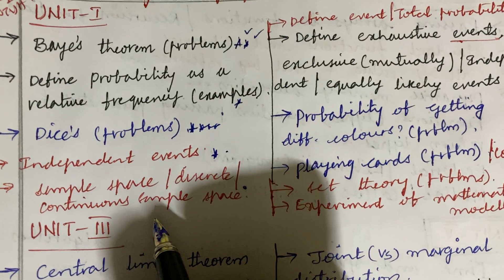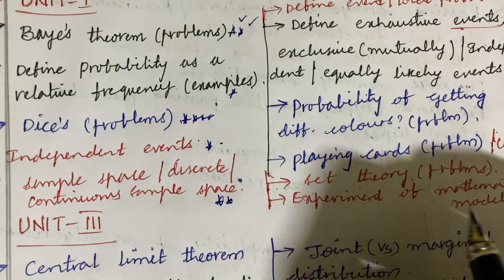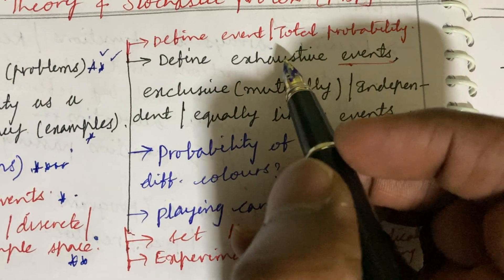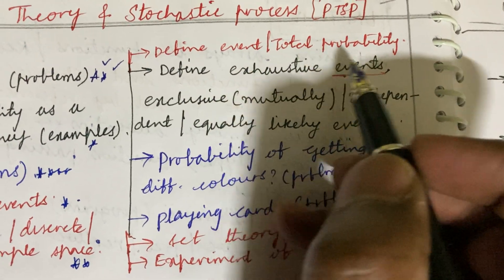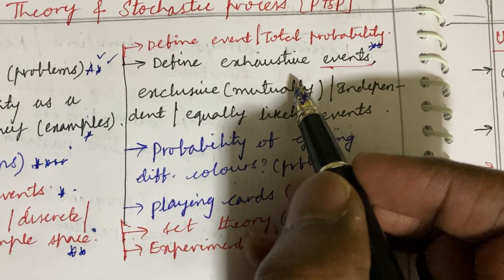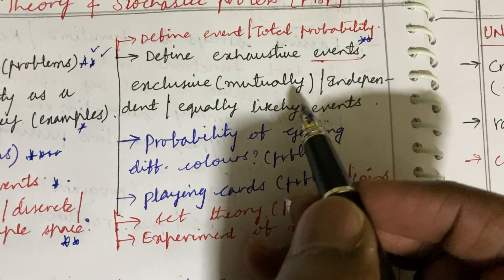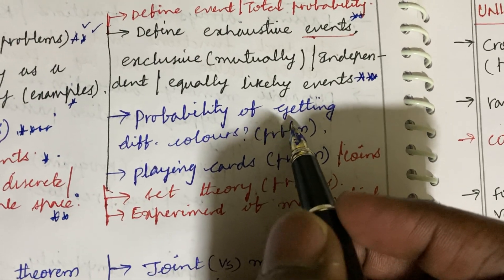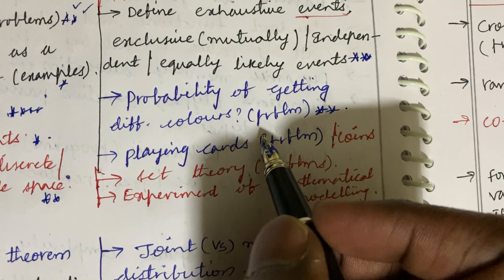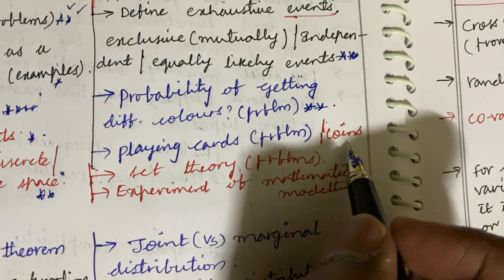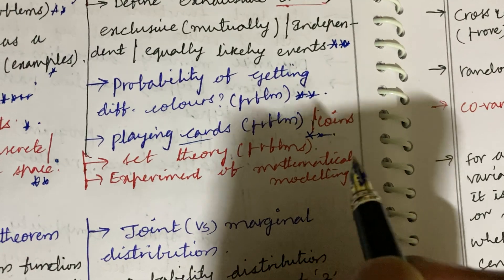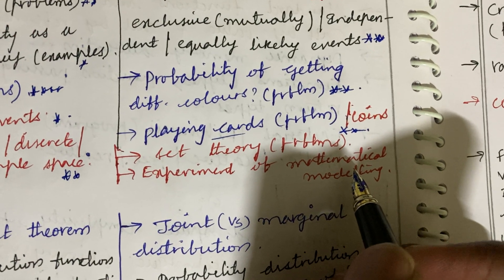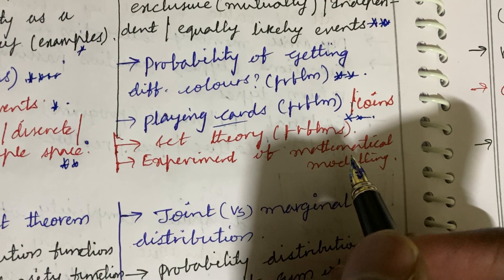Define the term independent events. Sample space, discrete sample space, as well as continuous sample space — such questions may come as short questions, or if asked together they may be long questions. Do not expect direct long questions; it is a combination of five-five split. Define the term event and define total probability — such questions may be short. Define exhaustive events, mutually exclusive events, independent events, and equally likely events — these are among the top questions. Problems related to probability of different colors, coins, and playing cards are also top questions.